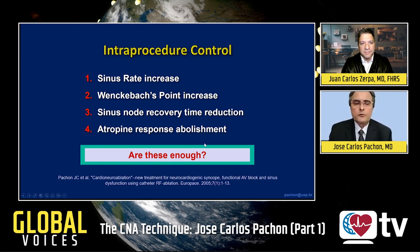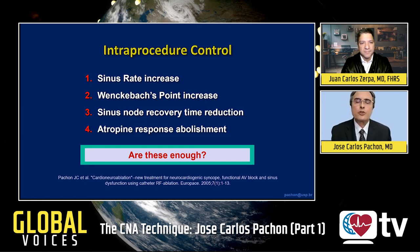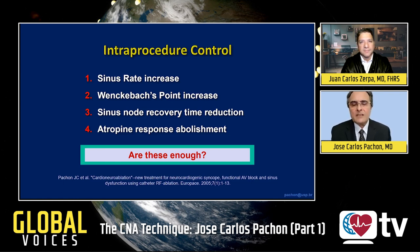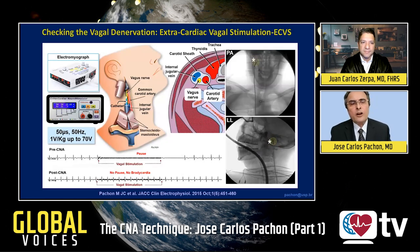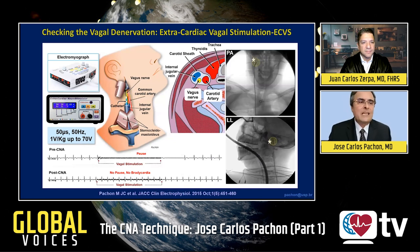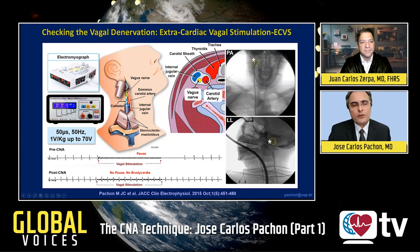All of these parameters may be useful to show that cardioneuroablation is achieving denervation. However, in our opinion, these parameters are not enough. To better control the procedure, we developed extracardiac vagal stimulation, which is easily obtained during the cardioneuroablation by advancing a catheter inside the superior vena cava and internal jugular vein.